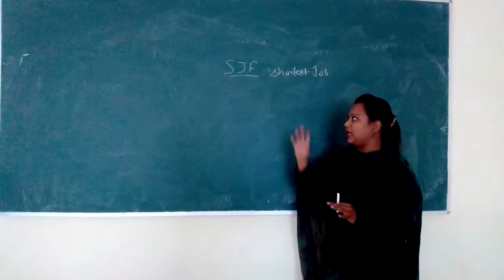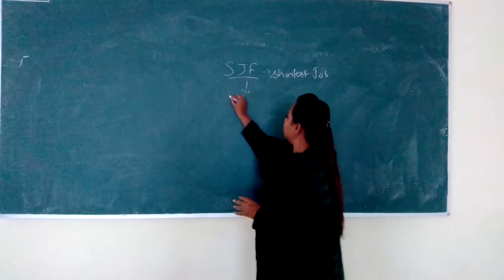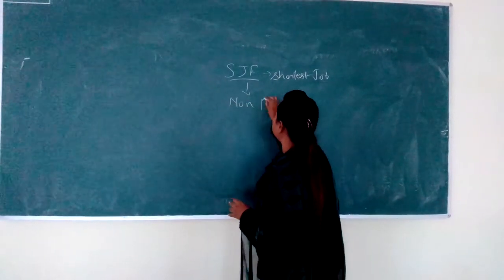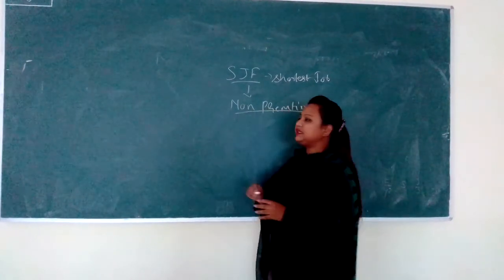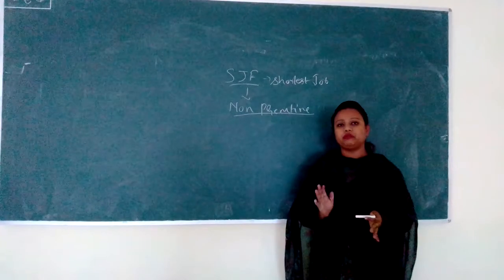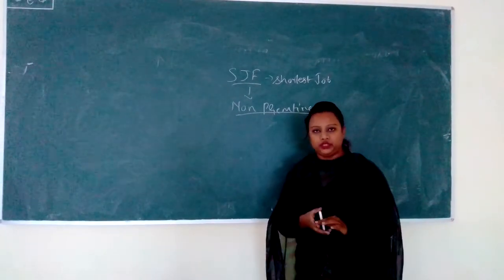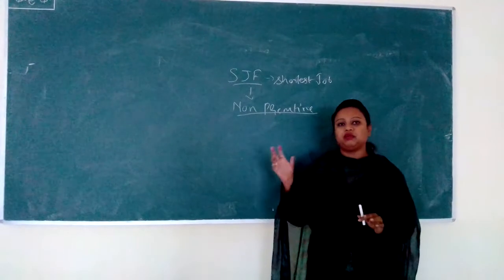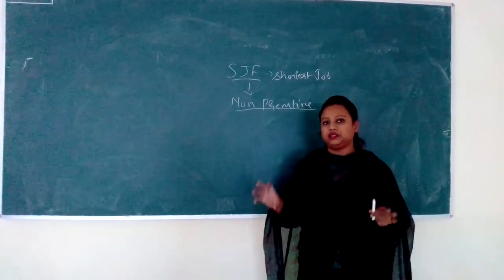What happens in non-preemptive case? The basic difference between non-preemptive and preemptive is that whenever a process starts in non-preemptive scheduling, it will continue until its completion. In the meanwhile, no other process will get assigned in the Gantt chart.